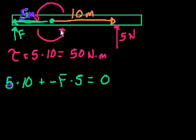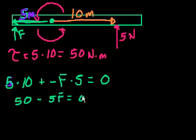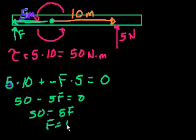The net torque is 0 because the object's rate of change of rotation isn't changing. Or if it started off not rotating, it's still not rotating. So here we get 50 minus 5F equals 0. That's 50 equals 5F. F equals 10. And if we followed the units all the way through, we would get that F is equal to 10 newtons.